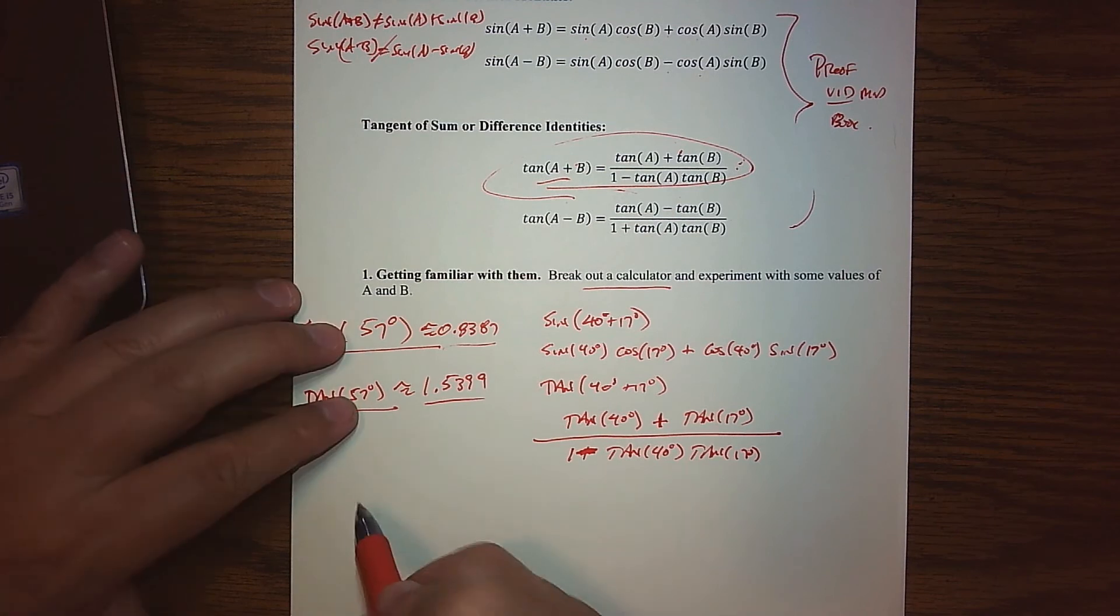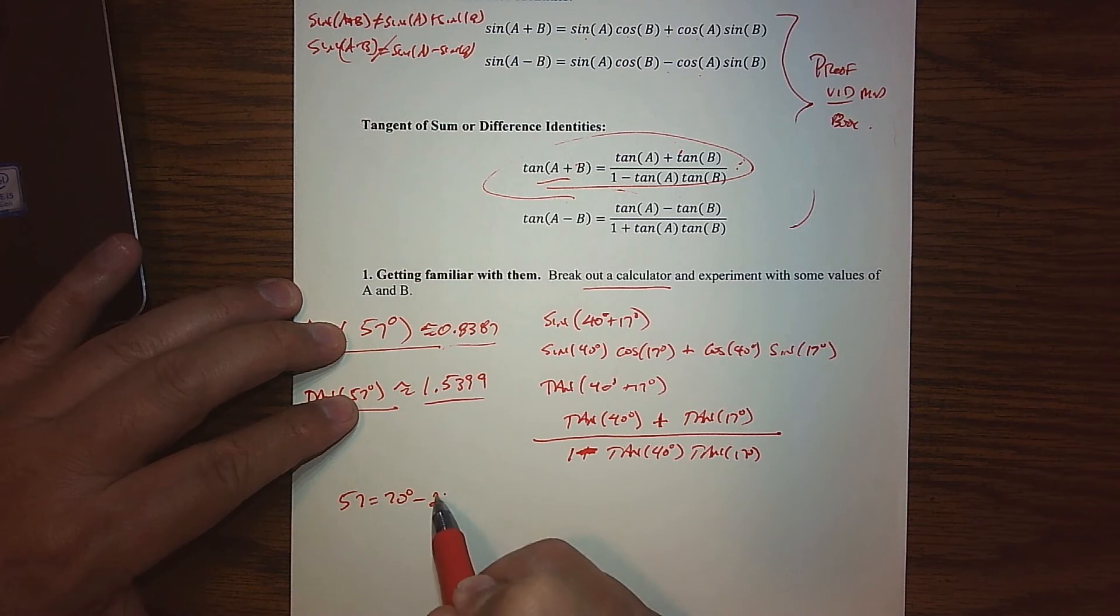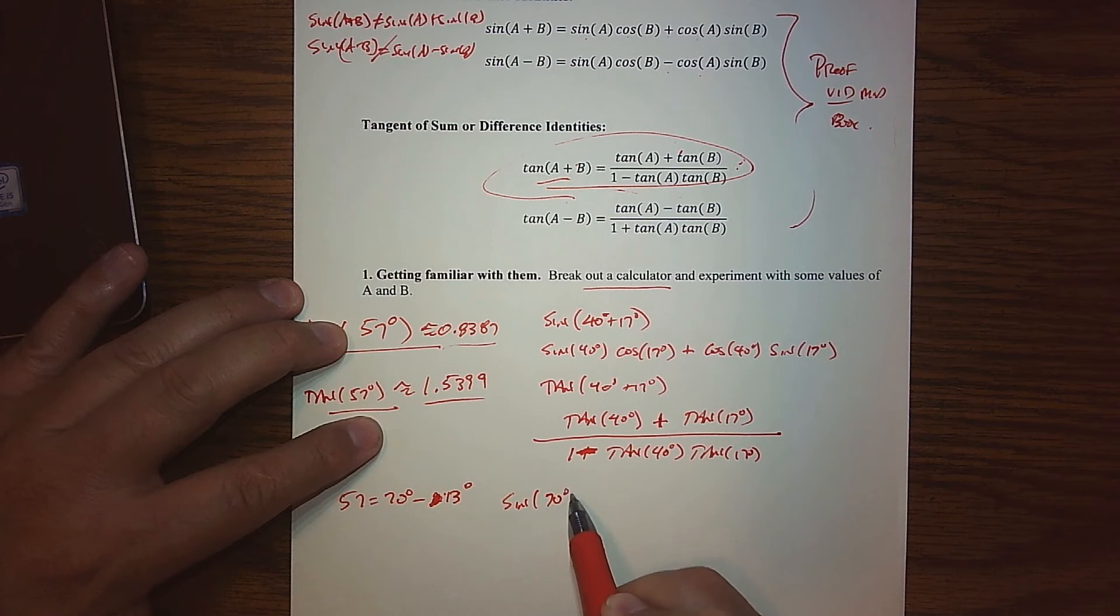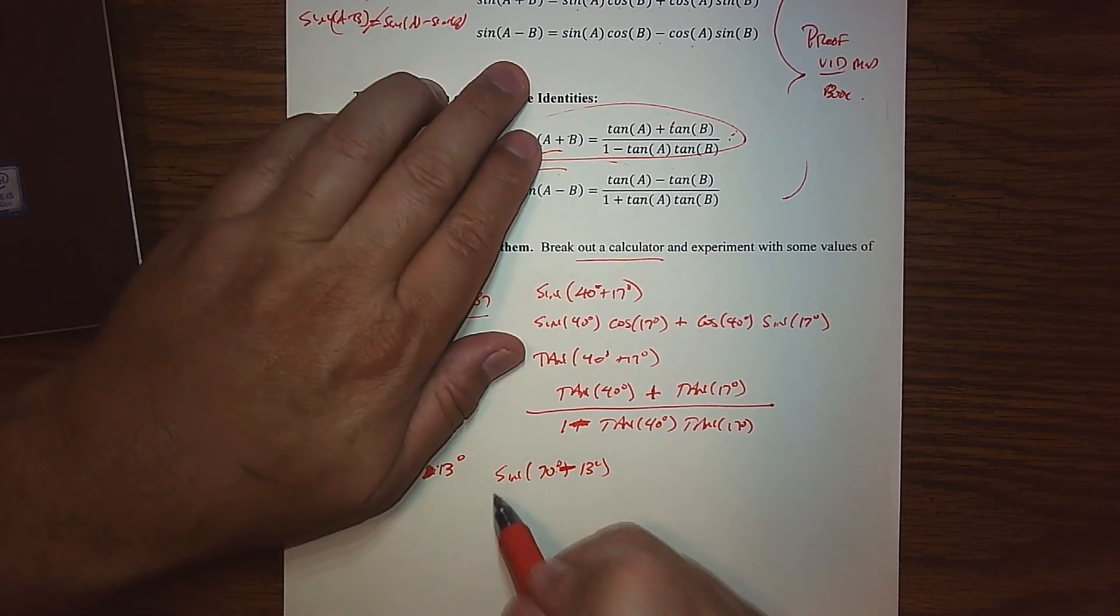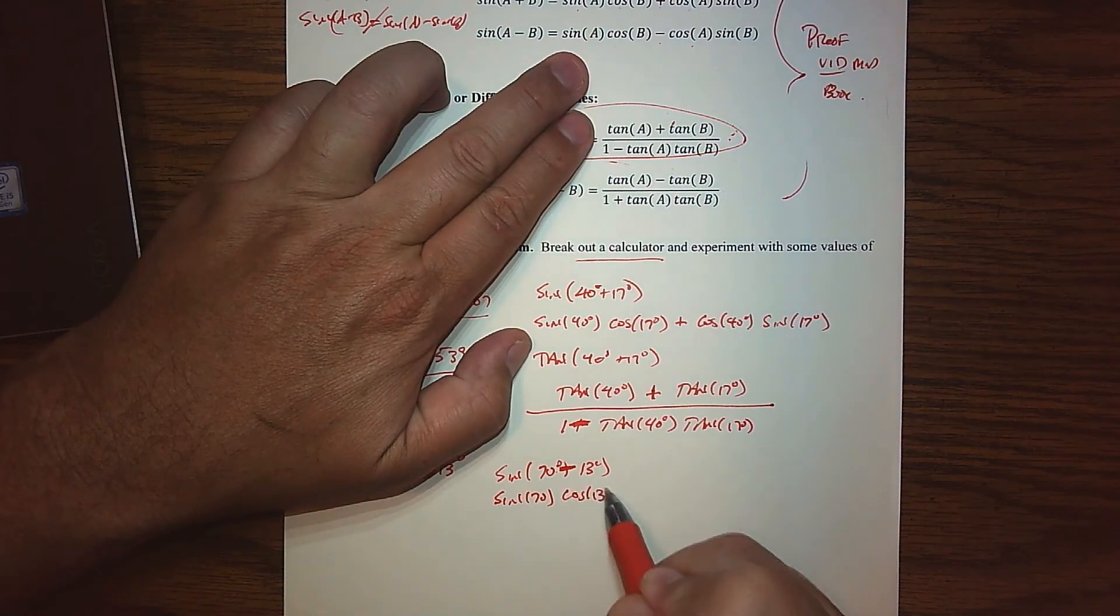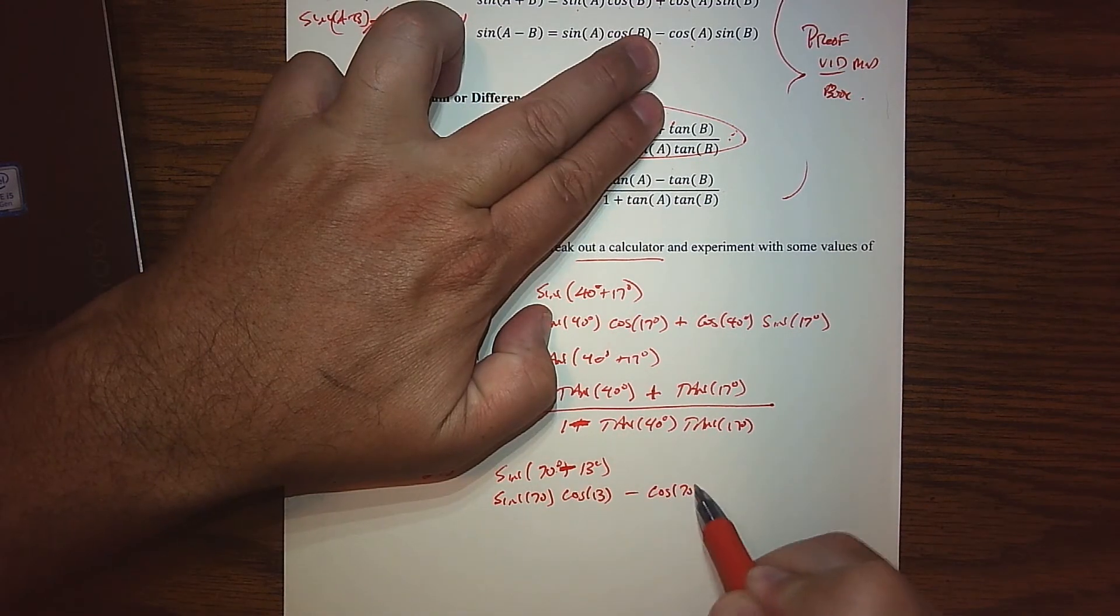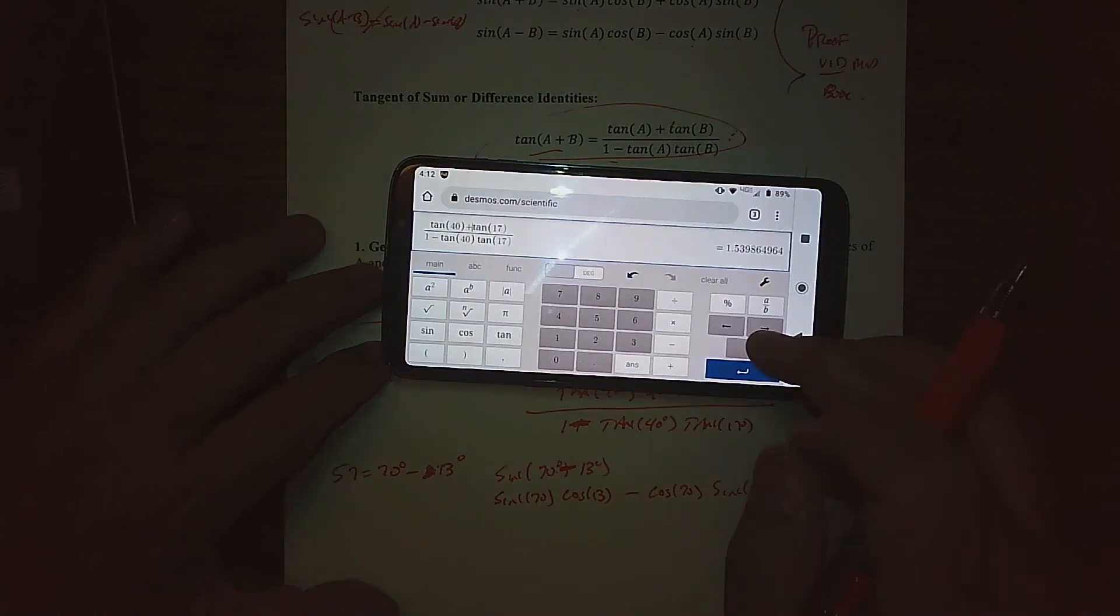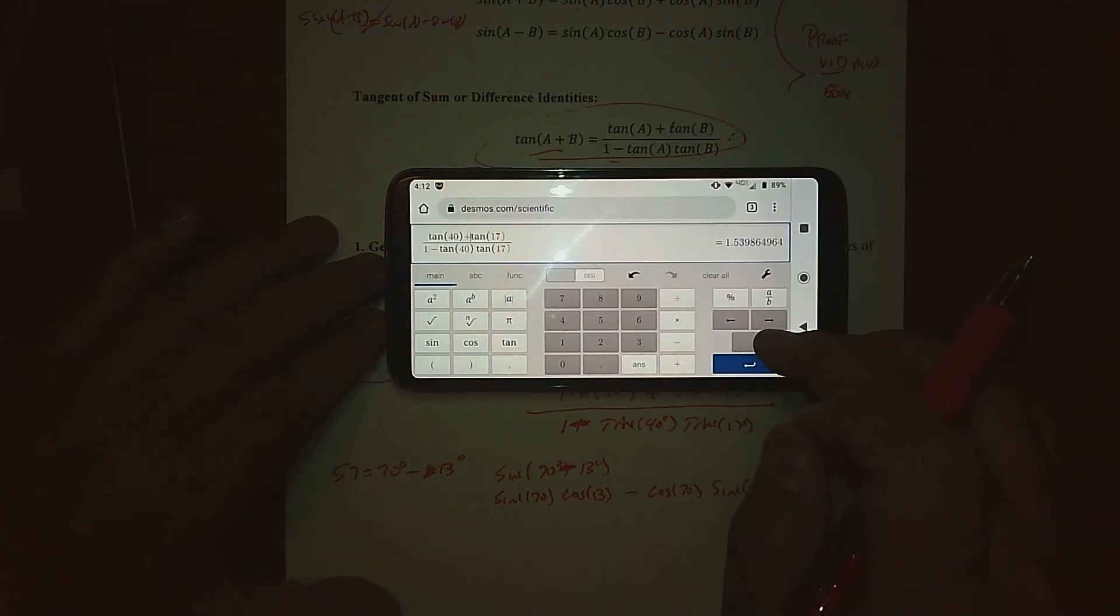57, again, maybe we can write 57 as 70 minus, what would that be? 13. So 70 minus 13 is a way to write 57. So the sine of 70 minus 13 degrees. That, according to this, would be the sine of 70 times the cosine of 13 minus the cosine of 70 and the sine of 13. So according to that guy there. So let's go ahead and we'll clear this out.